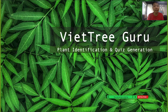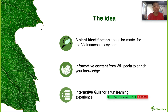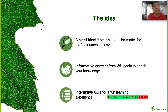My app is Vitry Guru, a plant identification and quiz generation app. The idea is pretty simple — it's an app that helps people identify plants based on the leaf. There are several apps in the market which already do this. However, this app is unique because it is tailor-made for the Vietnamese ecosystem. After getting the result from plant identification, the app generates informative content from Wikipedia. Finally, I want to introduce an educational feature: an interactive quiz for a fun learning experience.